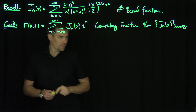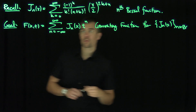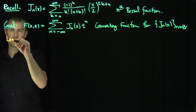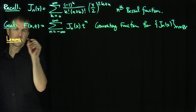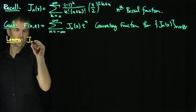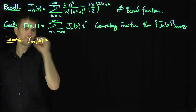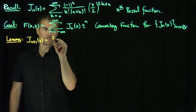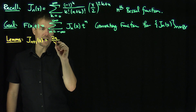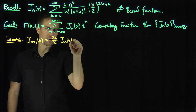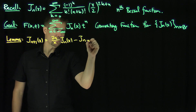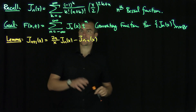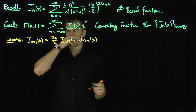Let me write down a lemma, and we'll use the lemma to find out what this function is. Our lemma is that j_{n+1} of x is equal to 2n over x times j_n of x minus j_{n-1} of x.